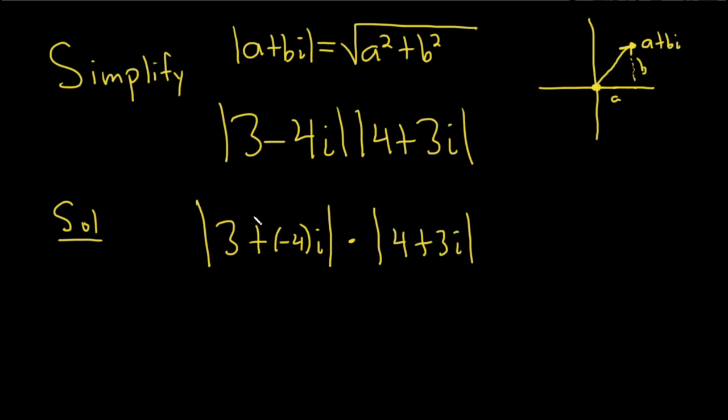So now let's apply the formula to this first piece here. This is equal to the square root of, so we'll square the a, so that'll be 3 squared, plus, and now we're going to square the b, so that'll be negative 4 squared, which is 16. And there's no i. You might say, where's the i go? It's gone. The formula gets rid of the i.